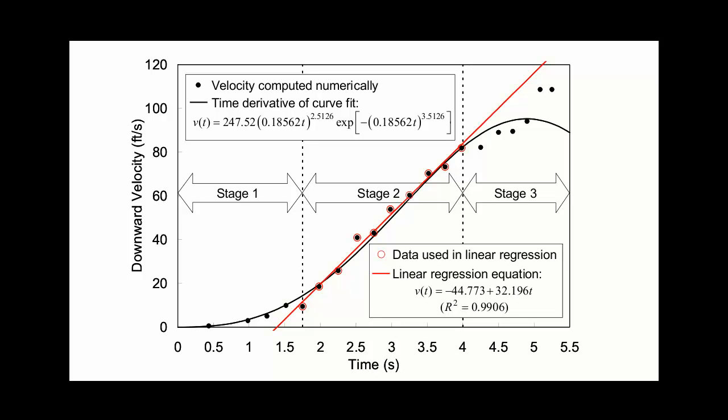So he points to the dots in Stage 2 that lie persistently above the freefall curve. Of course there are points above the curve. The curve is drawn so it goes through the middle of the scattered data. He doesn't get it. He simply doesn't get it.